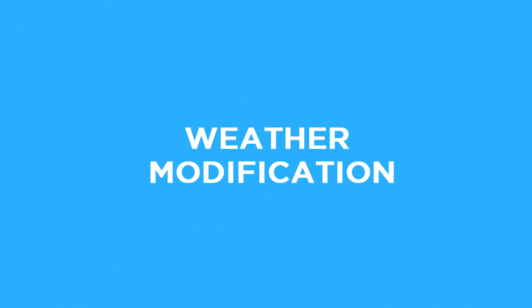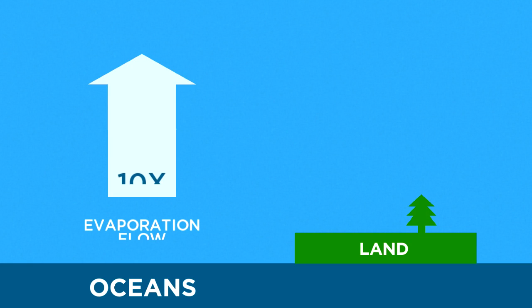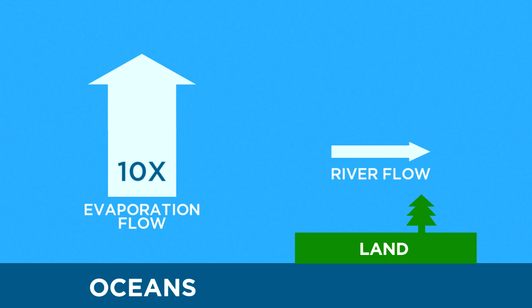A second way to improve the water cycle: weather modification. Recall that 413,000 cubic kilometers of water flows from the oceans into the atmosphere annually, 10 times the 40,000 cubic kilometers flowing through all the world's rivers. This is an immense resource waiting to be developed.